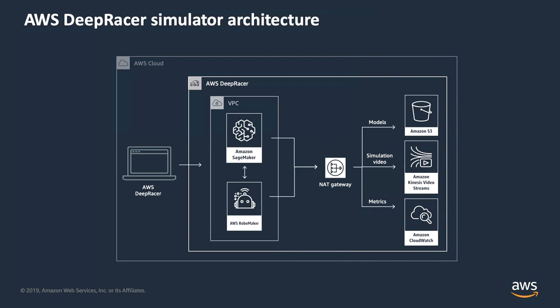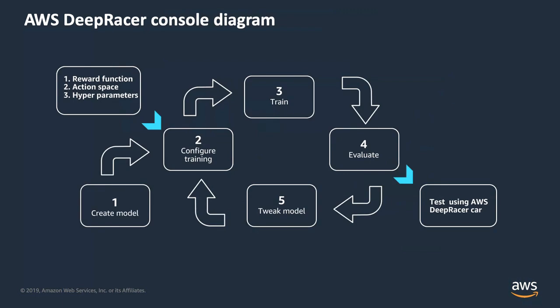When you begin your DeepRacer journey, you'll start with creating the model. From there, you'll choose the configurations for your training. You can choose to alter the parameters inside of the reward function, the action space, and some other hyperparameters. From there, it's off to the races. At first, your model will most likely only be operating in a random fashion. But after a while, you can evaluate how effective it's running. In the event that you're feeling comfortable with the current simulation, you can save your model in preparation for your upcoming DeepRacer event. Otherwise, feel free to tweak your model and resubmit it for training.